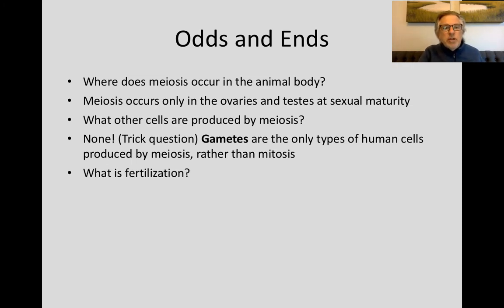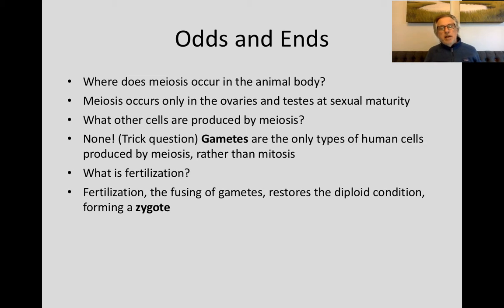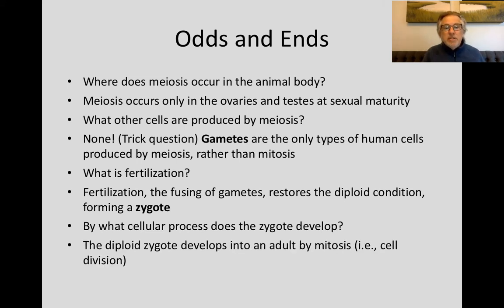So what is fertilization? Fertilization occurs when two different kinds of gametes, sperm and egg, fuse. That restores the diploid condition and creates what's known as a zygote — a vocabulary word you need to know. By what process does the zygote develop? That's a mitotic process. The zygote develops into an adult by mitosis, by cell division.